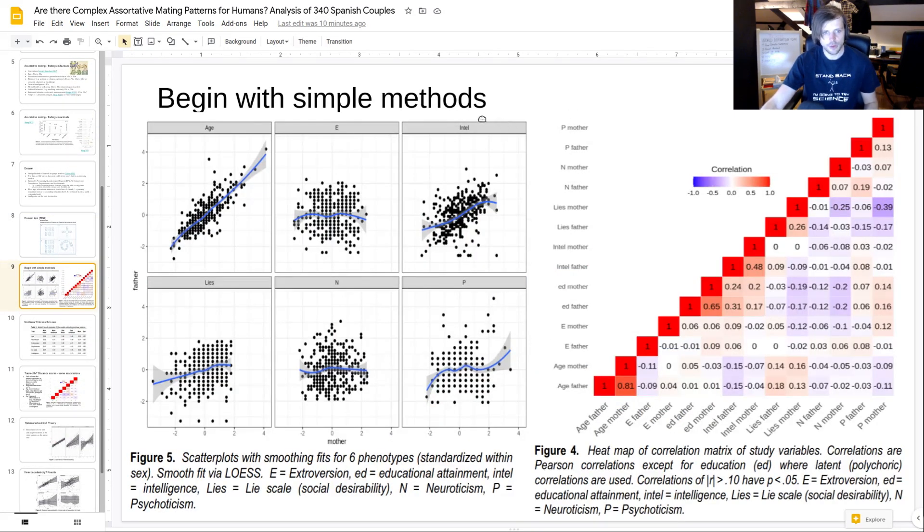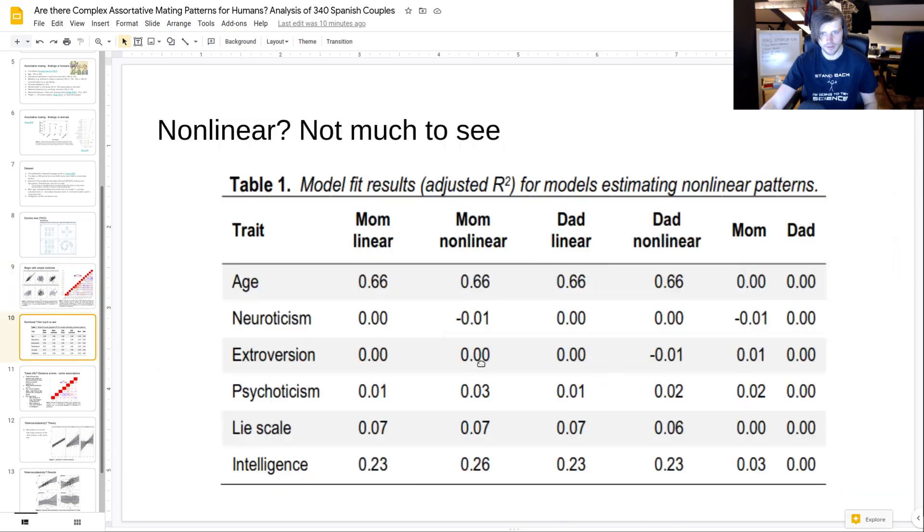To get to the things, we can start with the very simple stuff. We take the same trait in both parents and we plot them. And if you do that, then you get these patterns. So the blue line here is the local regression, a smoothing line. Basically, you see for age is essentially linear. There's nothing much to see. And the other ones are mostly linear. The exceptions are at the tails. You could say, okay, that's maybe not entirely linear, but you can do a test to see if these actually are significant, if that's above what you'd expect by chance.